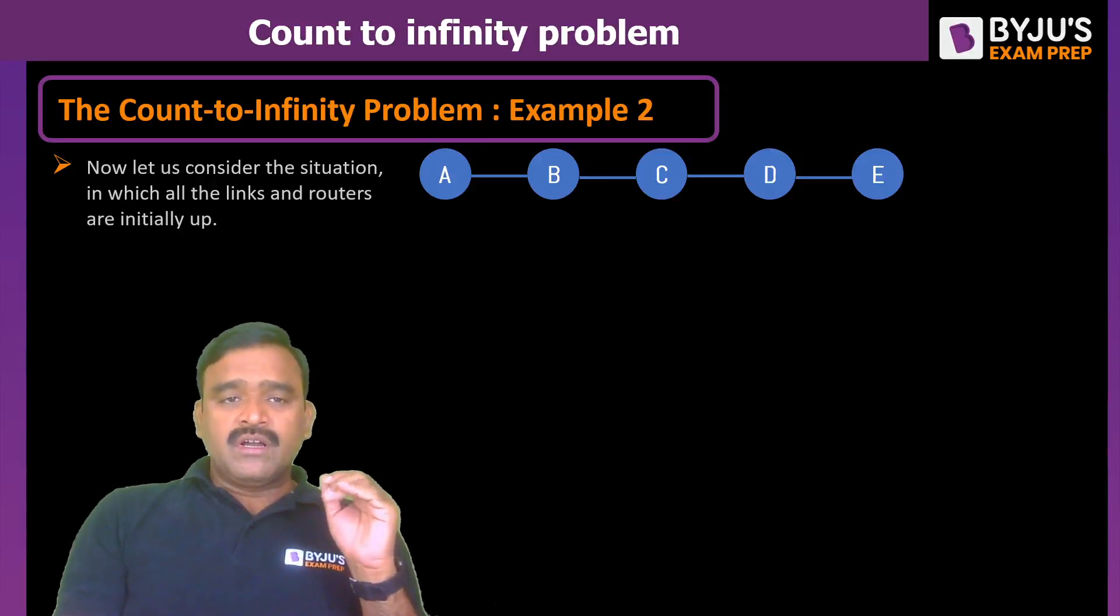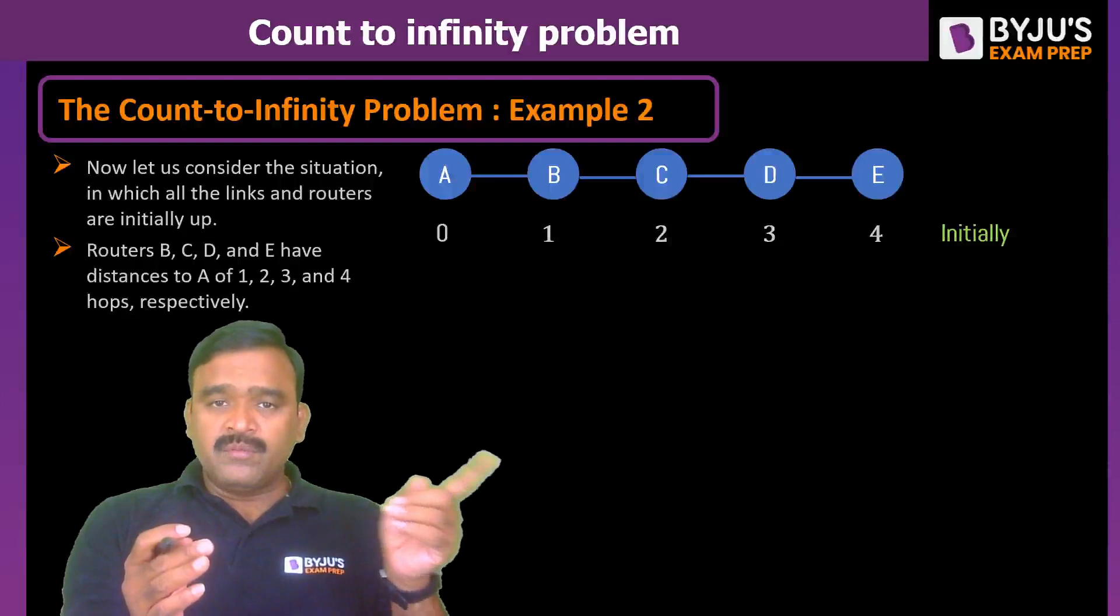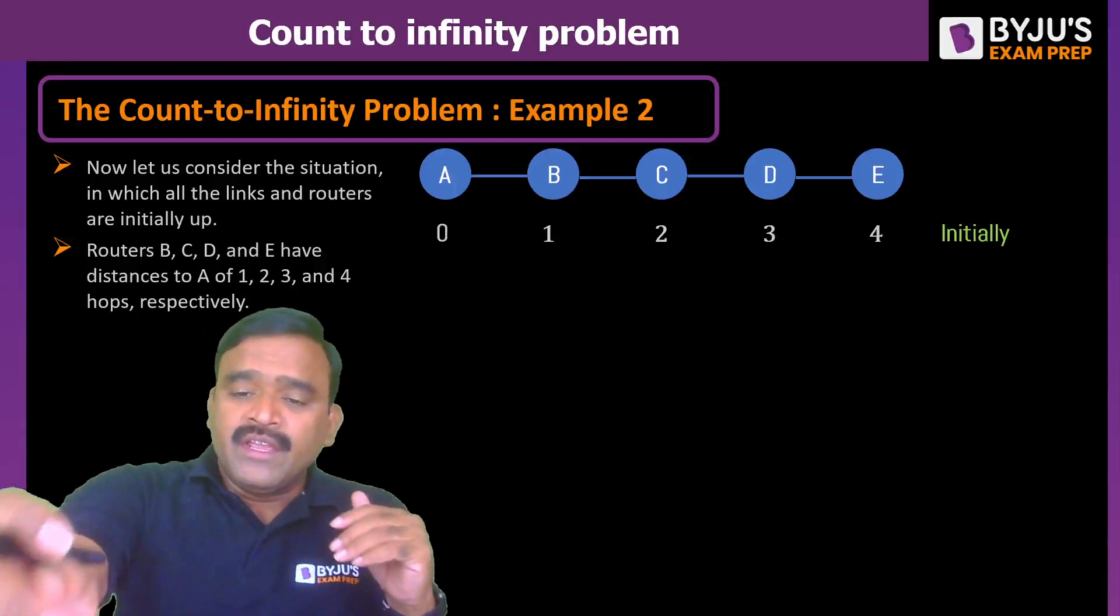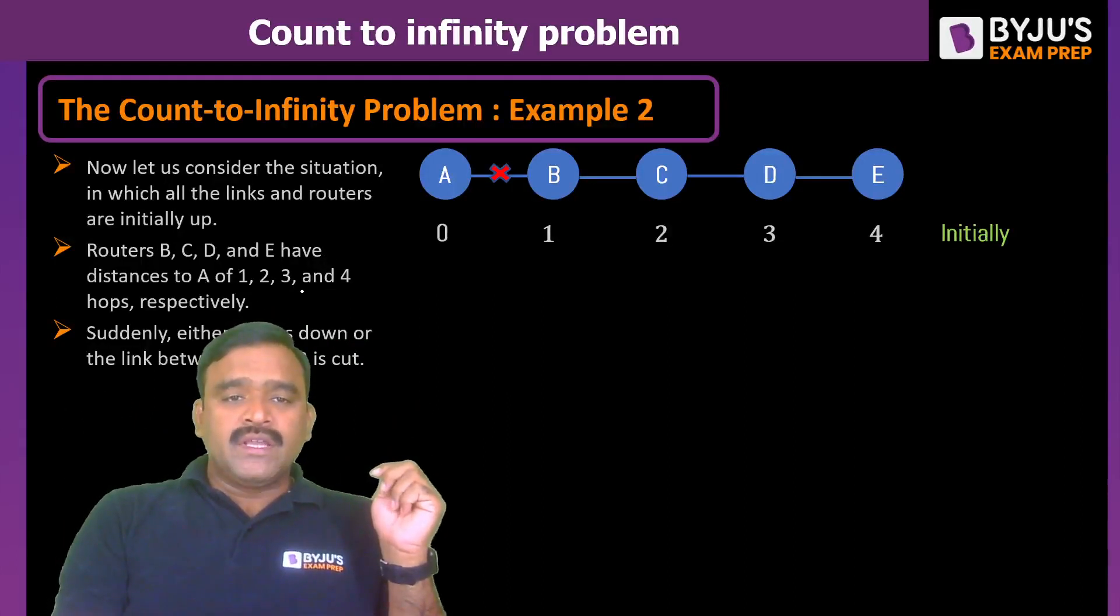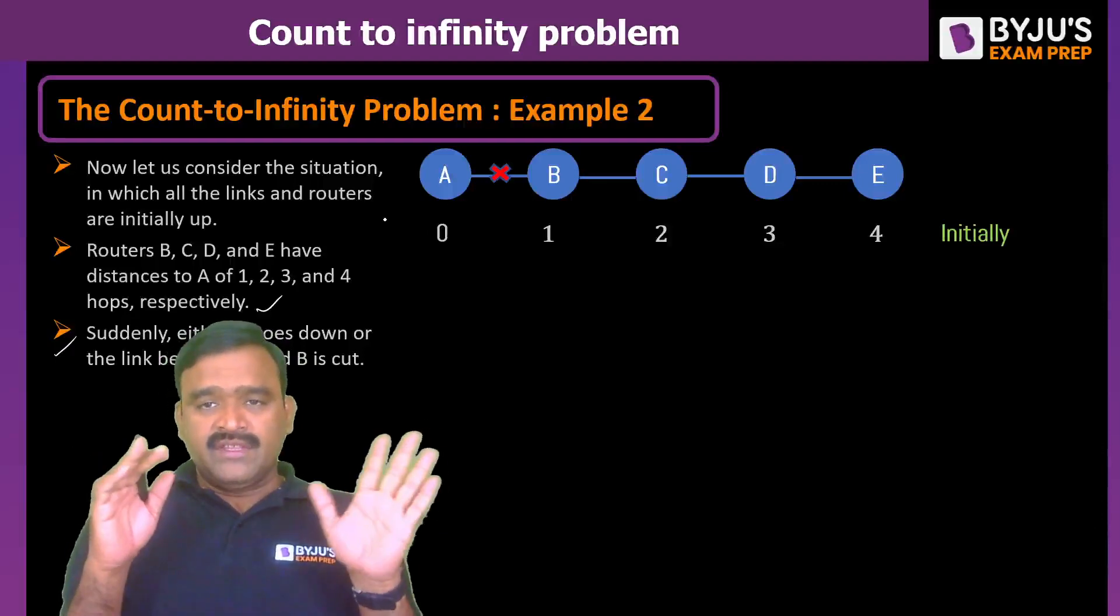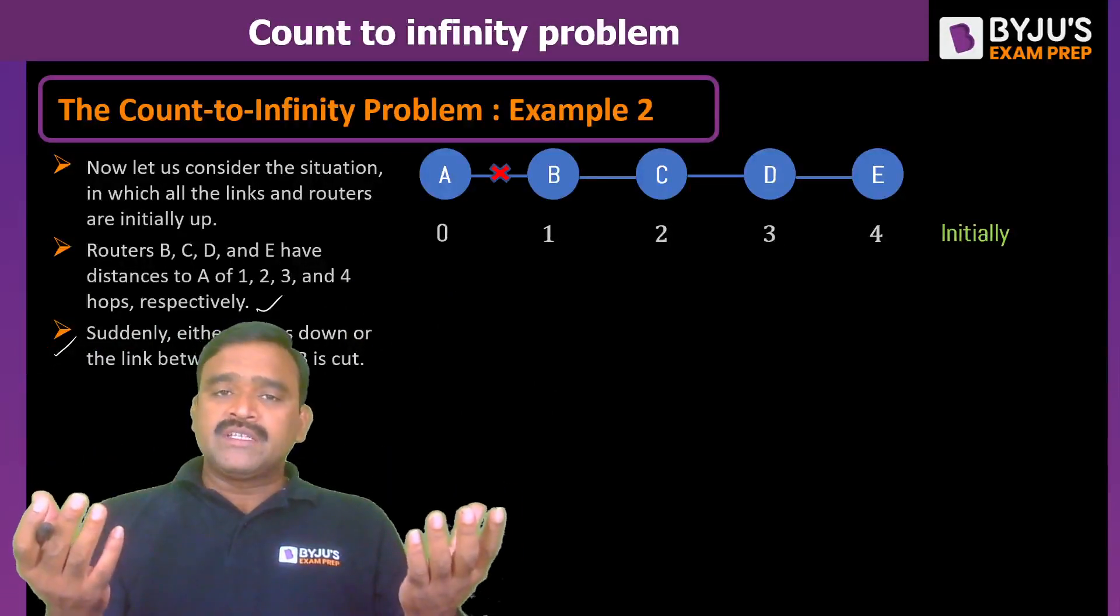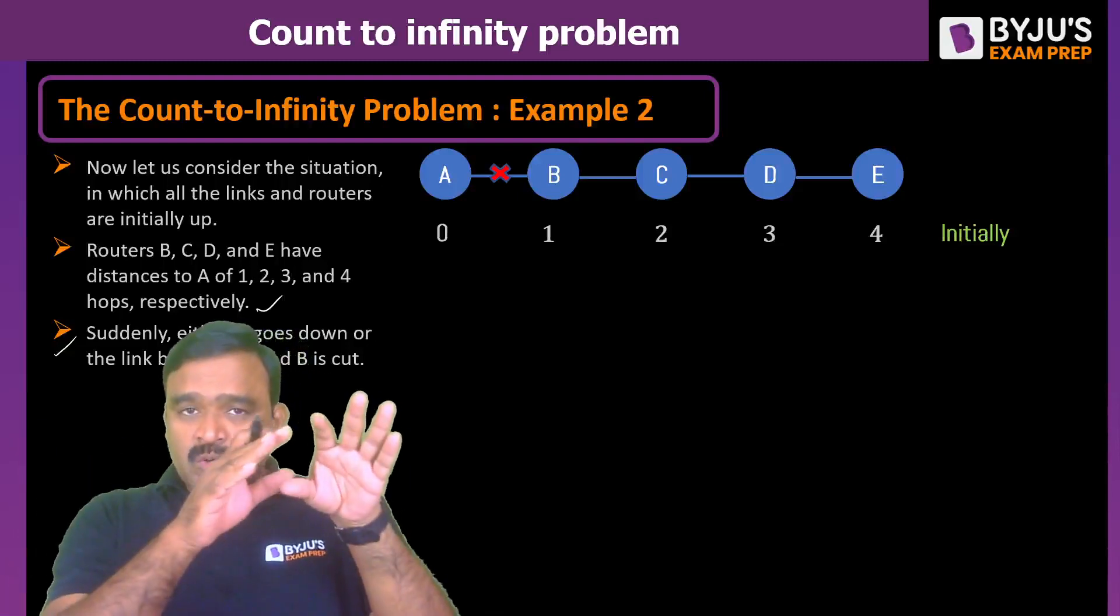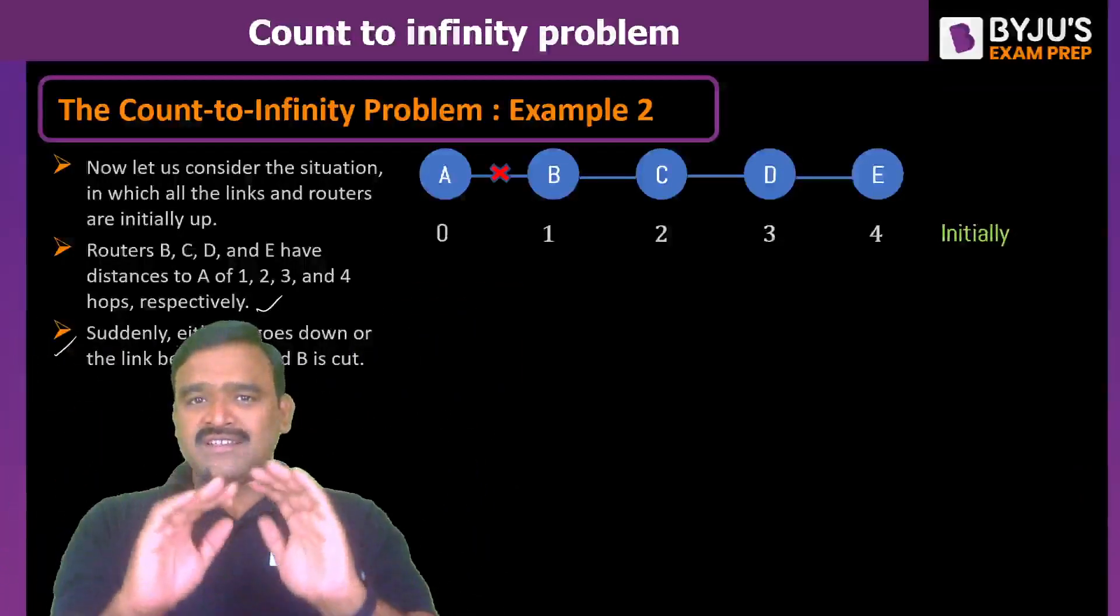Now let us consider the situation in which all the links and the routers are initially up and we are having A to A 0, B to A 1 in the number of hops, C to A 2, D to A 3 and E to A 4. Now at this point of time, if A is down and the link from A to B has been disconnected, so routers B, C, D and E have distances to A as 1, 2, 3, 4 respectively and suddenly either A goes down or the link between A and B is cut. Either of these things has happened, for example. Now as the entire topology is not known like a link state routing, what we do in a distance vector is only rely on the neighbors. If A is unable to reach, maybe B will try via C, can I go or not? Because the topology structure is not known to the entire node. How the nodes are there, how many links are there, it is not known. Only neighbors are known and exchange information from neighbors.